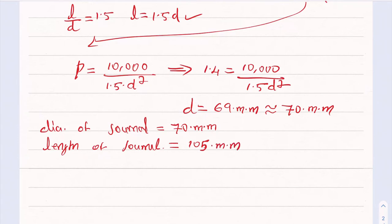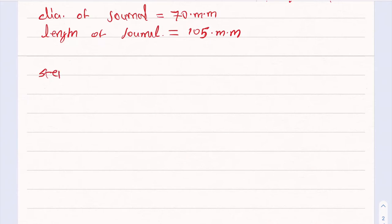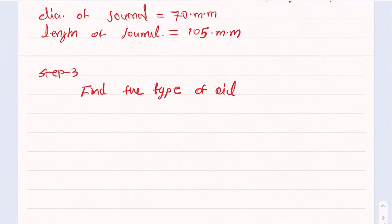We've found length and diameter. Now Step 3: Find the type of oil. Selecting the correct oil is very important because the possibility of producing hydrodynamic action depends on the oil's properties. Choosing the wrong oil means it cannot produce hydrodynamic action.